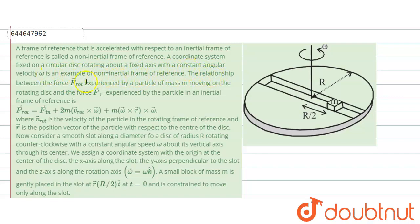Even though the velocity is constant, there would be acceleration — the centripetal acceleration. The relationship between the force F_rotational experienced by a particle of mass m moving on the disc and the force in an inertial frame of reference is: F_rotational equals the force in the inertial frame plus extra terms: 2m(v × ω) and m(ω × r × ω).